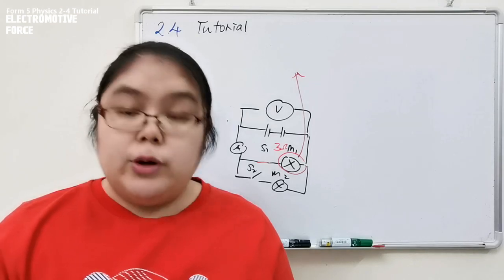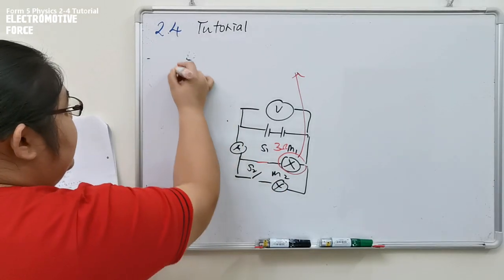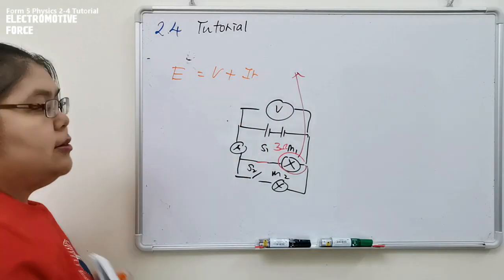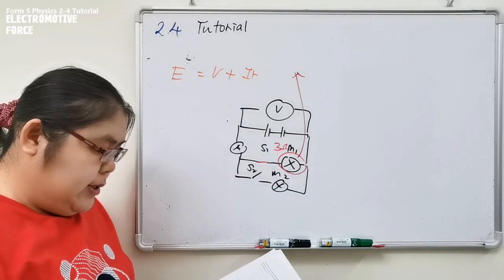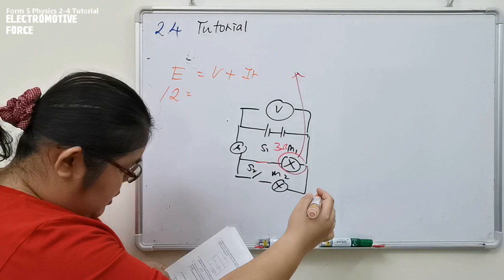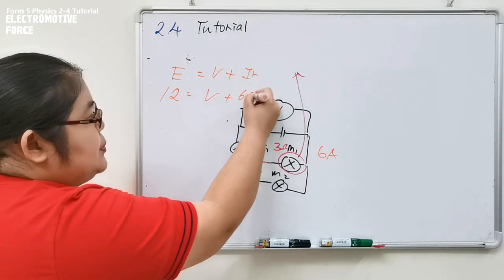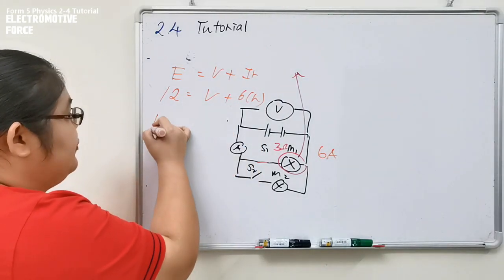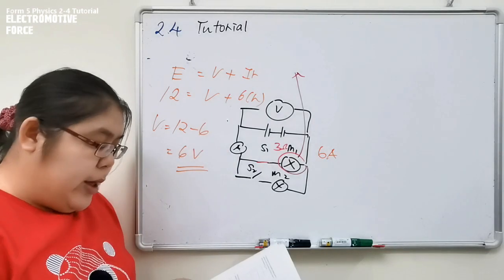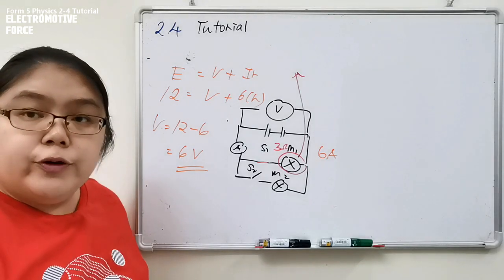Now we're going to see C1, they want to find the voltmeter reading. E equals V plus I small r. The E is still 12. Now the current changes to 6 ampere. So we apply V equals 12 minus 6 times 1. V equals 12 minus 6, that's 6 volt. When both switches are closed, the voltmeter reading becomes 6 volt.